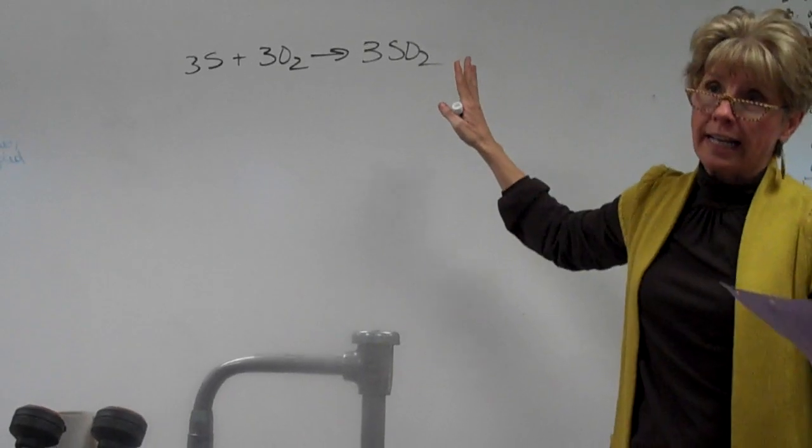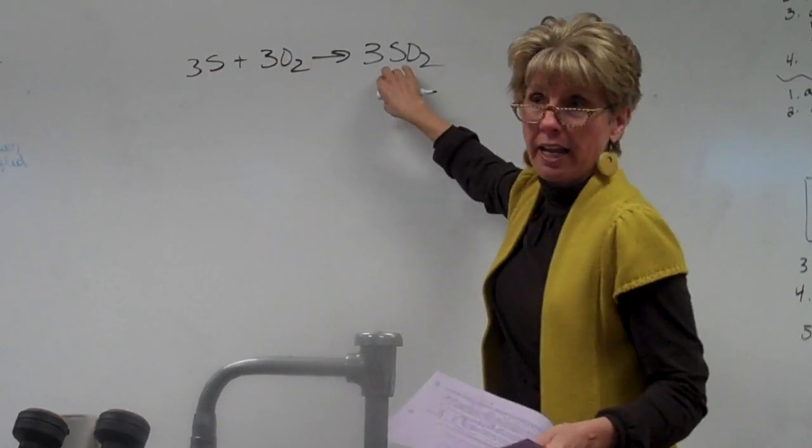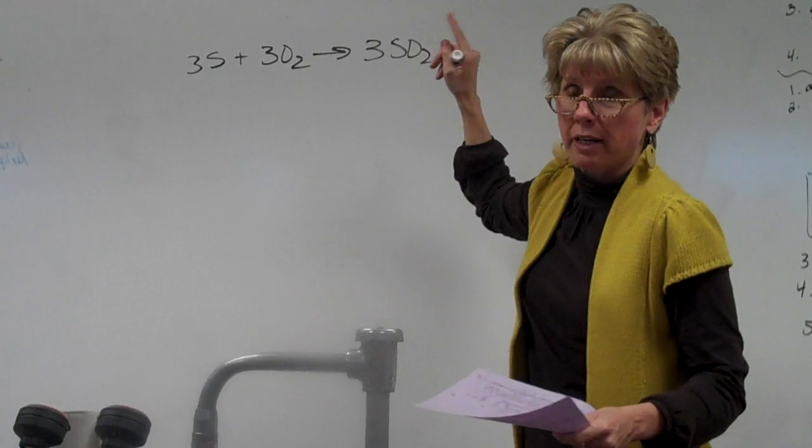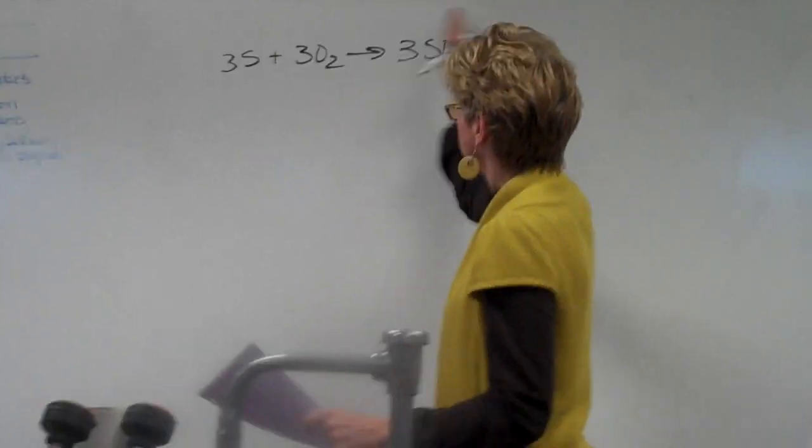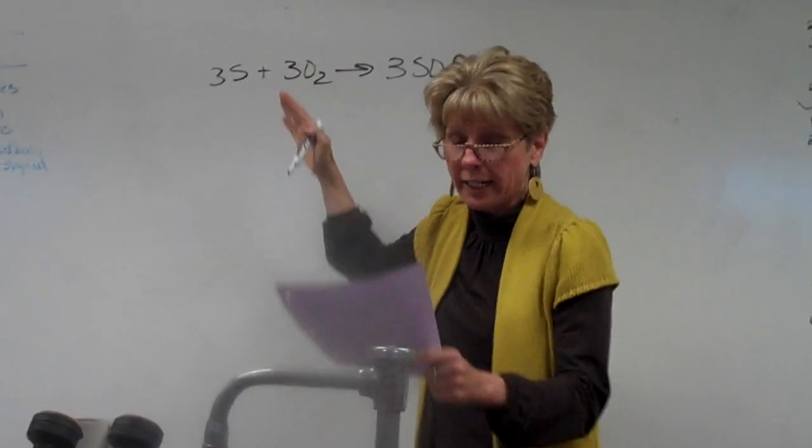We have three sulfur plus three oxygen yields three SO2. Now, the first thing I'm going to ask you before we analyze this, is this like a heat of formation equation? It sort of is, except we would have to divide these all by three, right? So you make one mole of product, but do you see that it's a compound being made from its free elements, right?